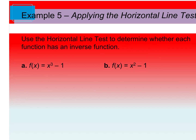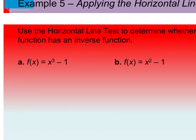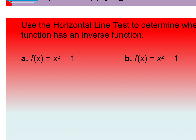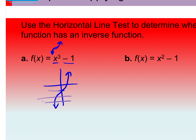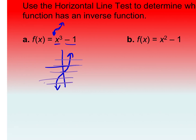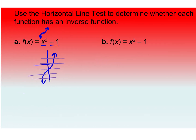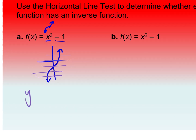Example 5 says use the horizontal line test to determine whether each function has an inverse. For part a, we can graph x³ − 1: the x³ graph has a certain shape, and subtracting 1 shifts it down one. If I put a horizontal line anywhere through this graph, it only touches at one point — so this would have an inverse. Yes, it has an inverse. The question isn't asking us to find it, but we could.